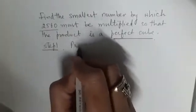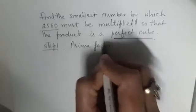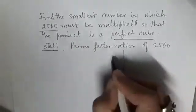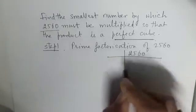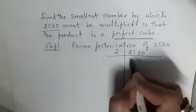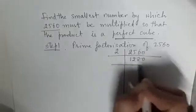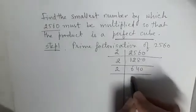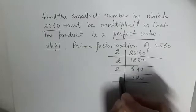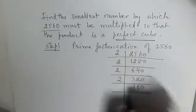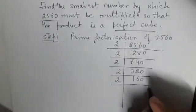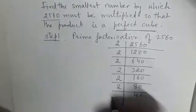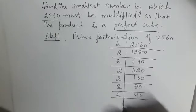Step one is prime factorization of 2560. We divide by 2 to get 1280, again by 2 to get 640, again by 2 to get 320, again by 2 to get 160, and again by 2 to get 80.